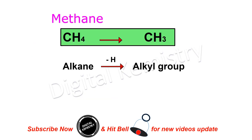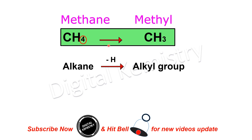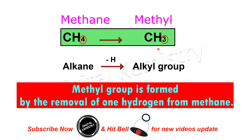For example, methane jise CH4 se represent kiya jata hai, yeh ek simplest alkane hai. Jaise hi methane mein se one hydrogen ko remove kiya jata hai, to iske result mein methyl group ki formation hoti hai. Methyl jise CH3 se represent kiya jata hai, yeh ek alkyl group hai.